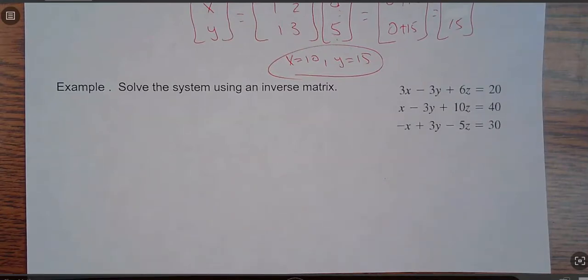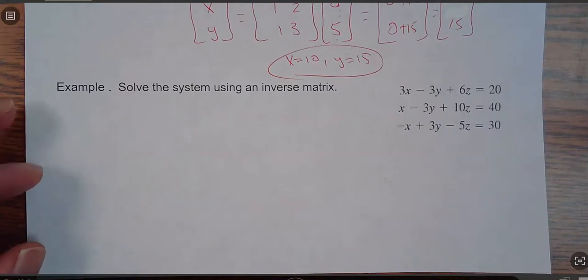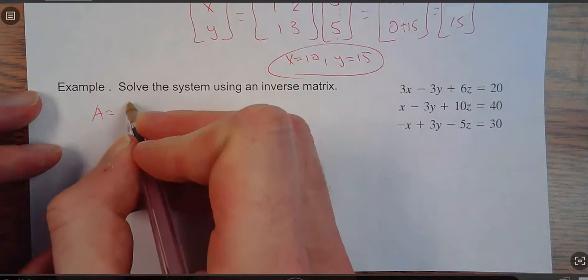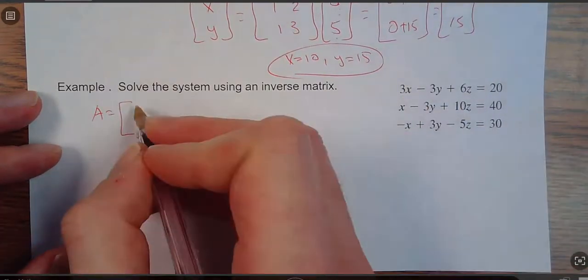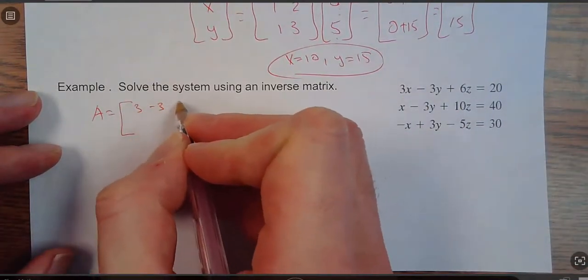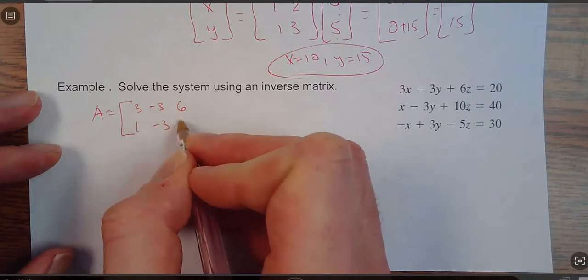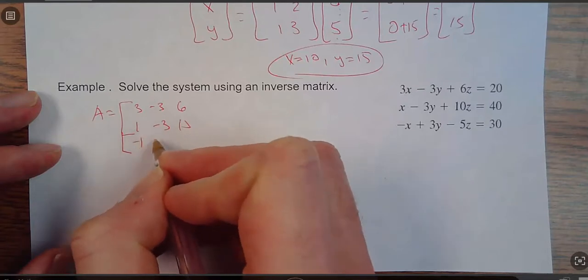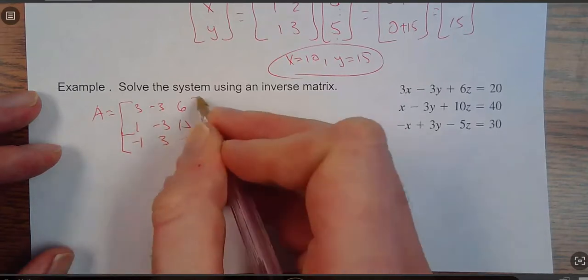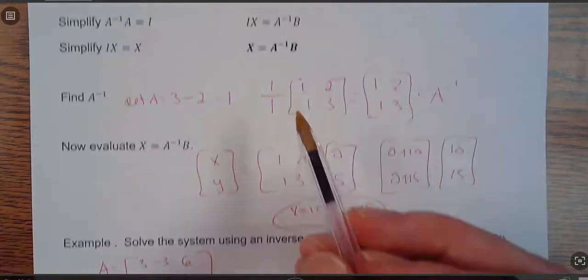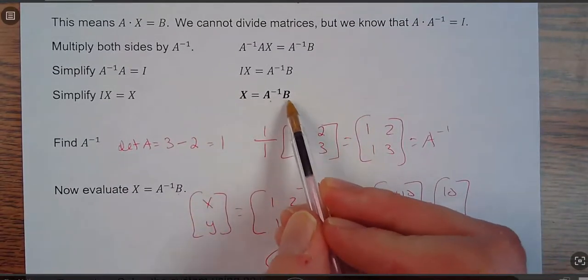But we could solve it pretty quick. So think of, you know, my A here would be just the coefficients of 3, negative 3, 6, 1, negative 3, 10. Oops, I should have went down further here. Negative 1, 3, negative 5. So that's my A. Now I need to find, because to solve it, I need to take the inverse of A times B.